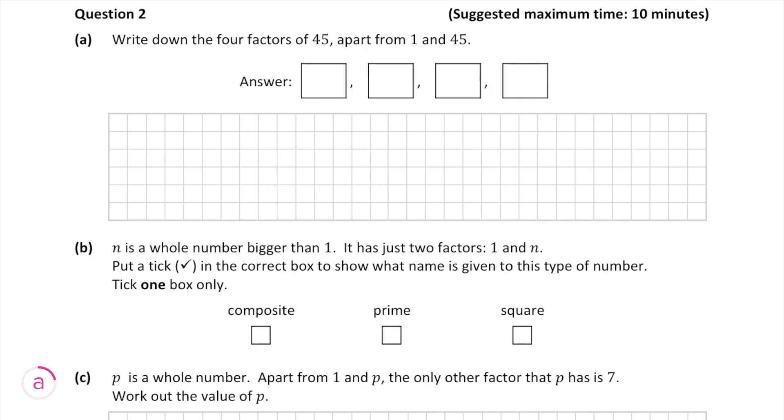Well obviously 2 doesn't divide into 45 because it's an odd number, but let's try 3. When we divide 45 by 3 we get 15, so 3 is a factor of 45. And since the answer is 15, that means 15 must also be a factor. That's because when we divide 45 by 15, we get 3.